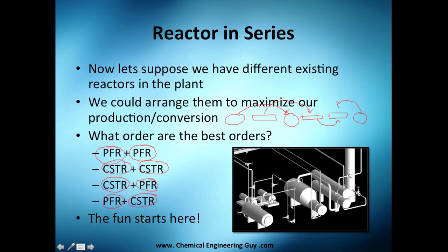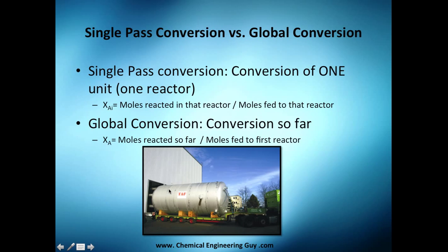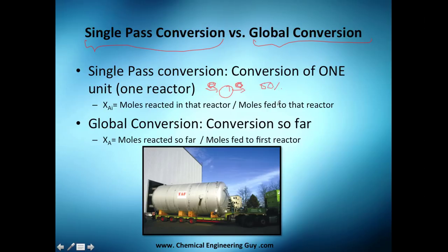This becomes straightforward because you already know how to calculate the volume for each reactor type and when to use each one. Since we're going to use multiple units, we need to distinguish between single pass conversion and global conversion. Single pass conversion is the conversion of one unit — if a reactor always converts 50%, that's its single pass conversion, and if your system has only that reactor, that's also your global conversion.